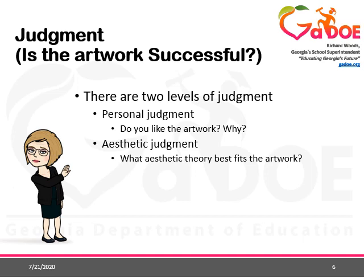Step four is judgment. This is when you decide whether the work of art is successful. You'll also need to say why you do or do not like it. Then you'll make an aesthetic judgment about the artwork and decide which aesthetic viewpoint best supports the artist's intent when making the art. Remember, a work of art can be very successful aesthetically, but you might not want to live with it.